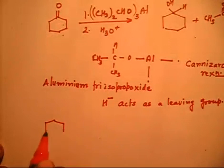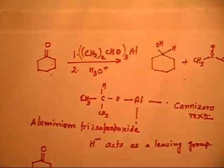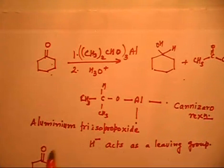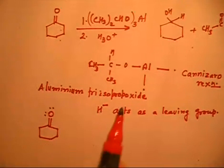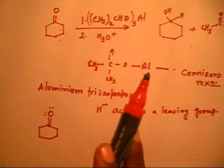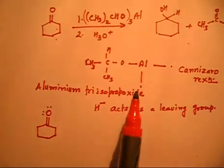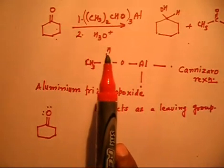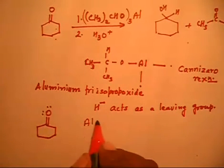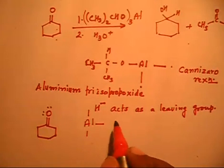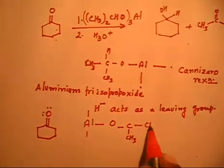You have a ketone here. In this case, aluminum can act as a Lewis acid and the carbonyl oxygen has an electron pair so it can act as a nucleophile, while aluminum acts as an electrophile. So the oxygen will attack on the aluminum, forming a bond. Aluminum has a hydrogen attached, so this hydride can shift to the carbonyl carbon.